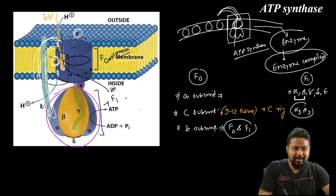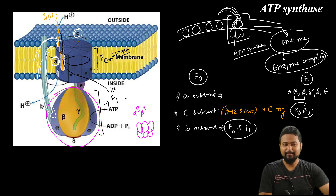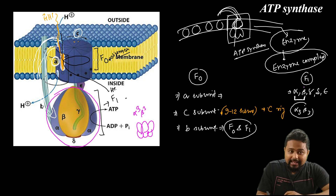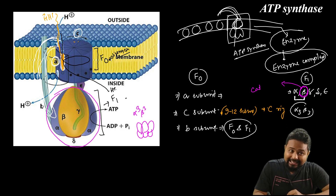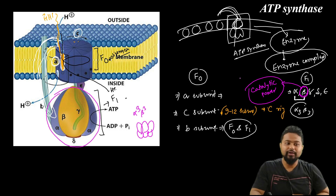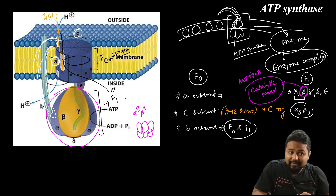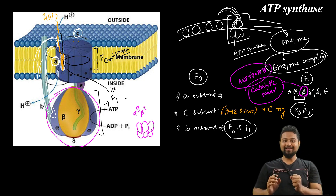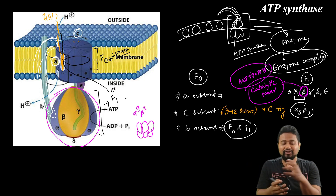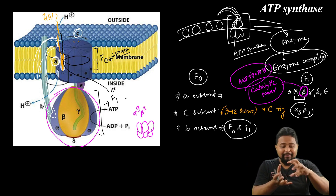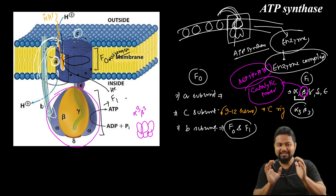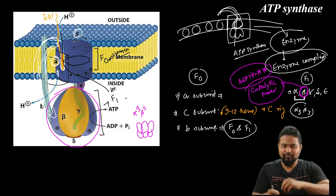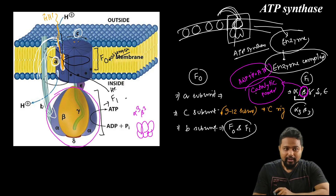Now looking at the F1 particle: it contains alpha and beta subunits arranged as alpha3-beta3. The beta subunit is very important — it has catalytic power. The beta subunit is where ADP plus inorganic phosphate are used to make ATP.